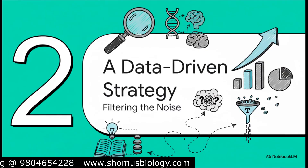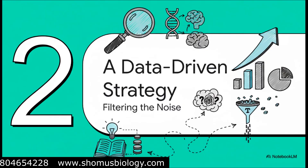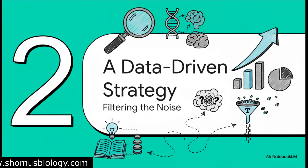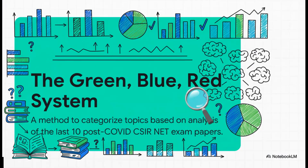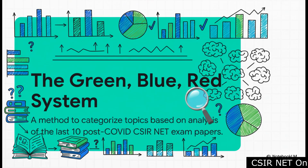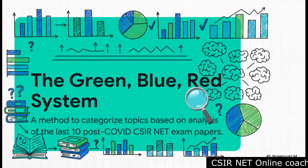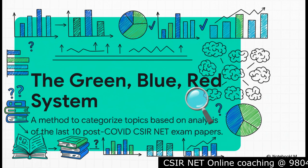The million-dollar question is: how do we prioritize? How do we know what's actually important? We do it by letting the data tell us, not our gut feelings. We're going to use a system based on what the exam is really asking year after year. This system isn't based on guesswork — it's the direct result of a deep dive into the last 10 question papers, specifically after the exam pattern changed around the COVID era. It tells us exactly which topics are hot and which ones are not.